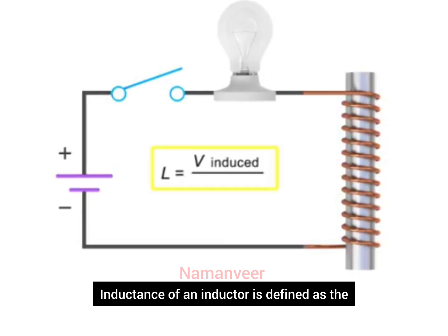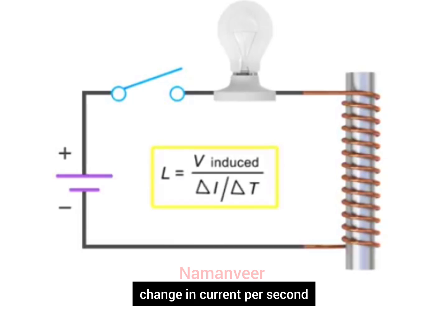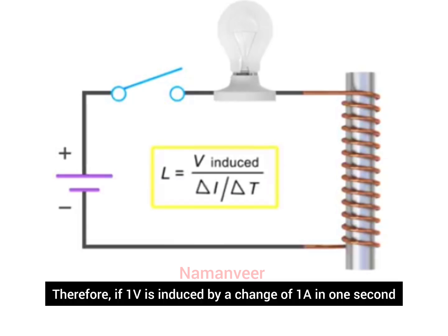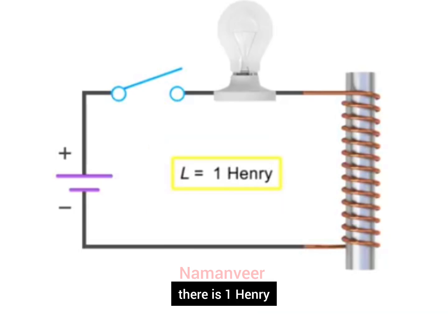Inductance of an inductor is defined as the amount of voltage induced divided by the change in current per second. Therefore, if 1V is induced by a change of 1A in 1 second, there is 1H of inductance.